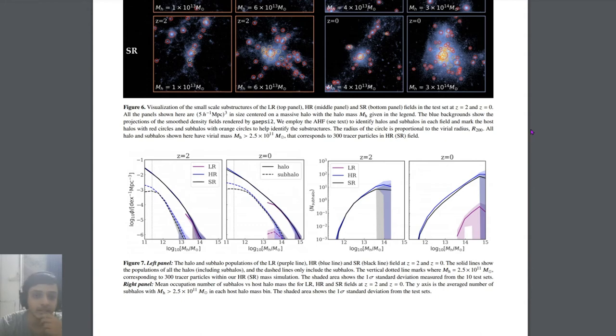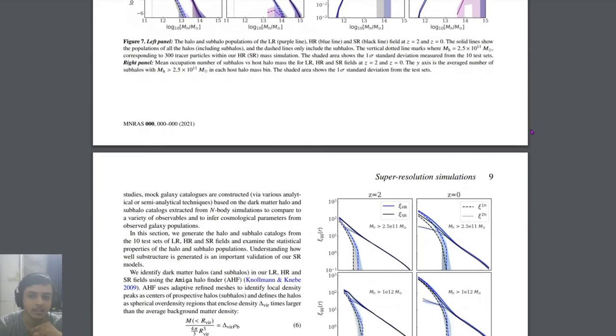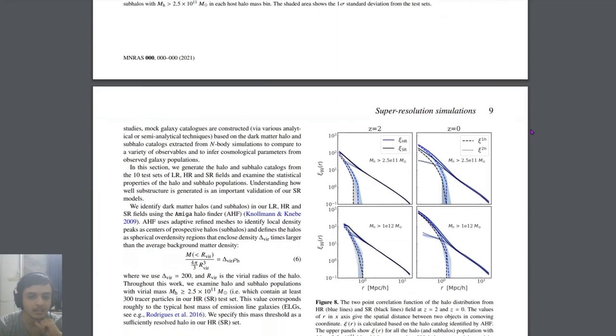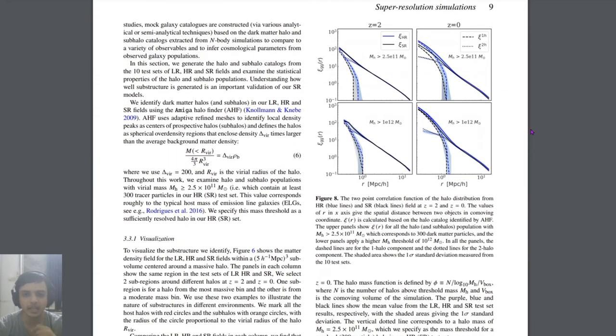It's quite an interesting topic because super resolution itself is interesting, and using AI on it is another challenging task. This is a graph showing the correlation function of this halo distribution for two types of representation that they tried to show: redshift z equals 2 and redshift z equals 0.